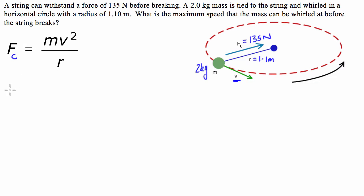So we know that the braking force is 135 newtons and that's going to be equal to 2 times whatever the maximum velocity is squared divided by our radius of 1.1.